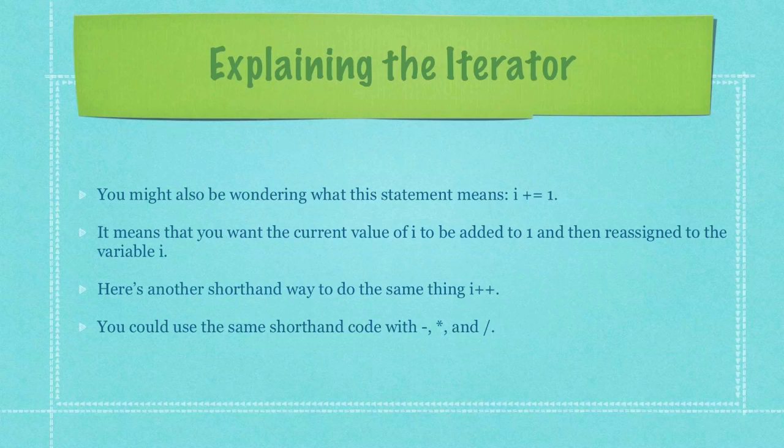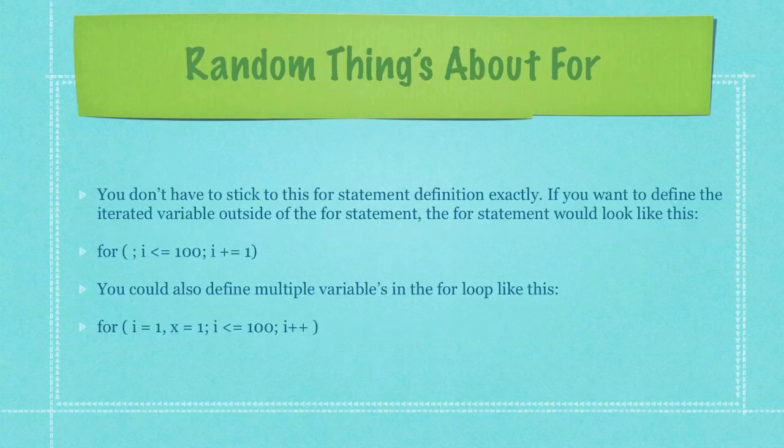I also just wanted to make sure that you understand you don't specifically have to stick to this for statement definition exactly. If you wanted to define the iterated variable outside of the for loop, the for statement would instead look like what you can see here which is just simply a semicolon.